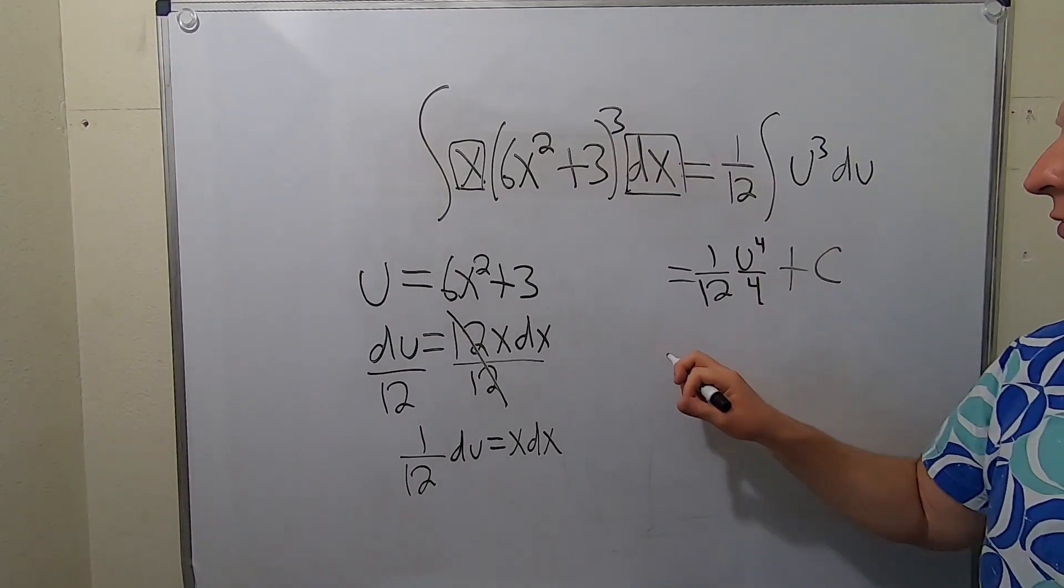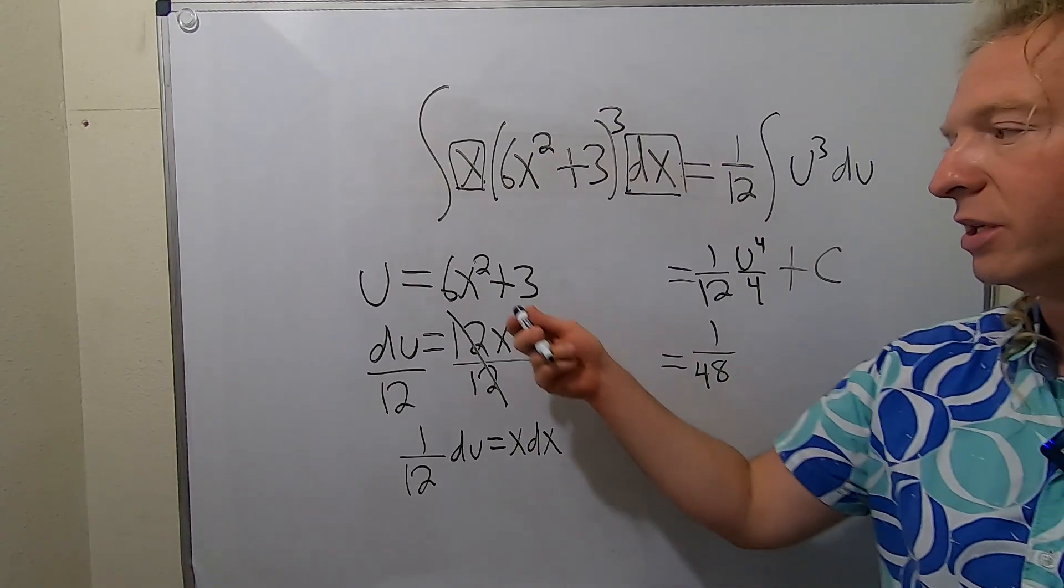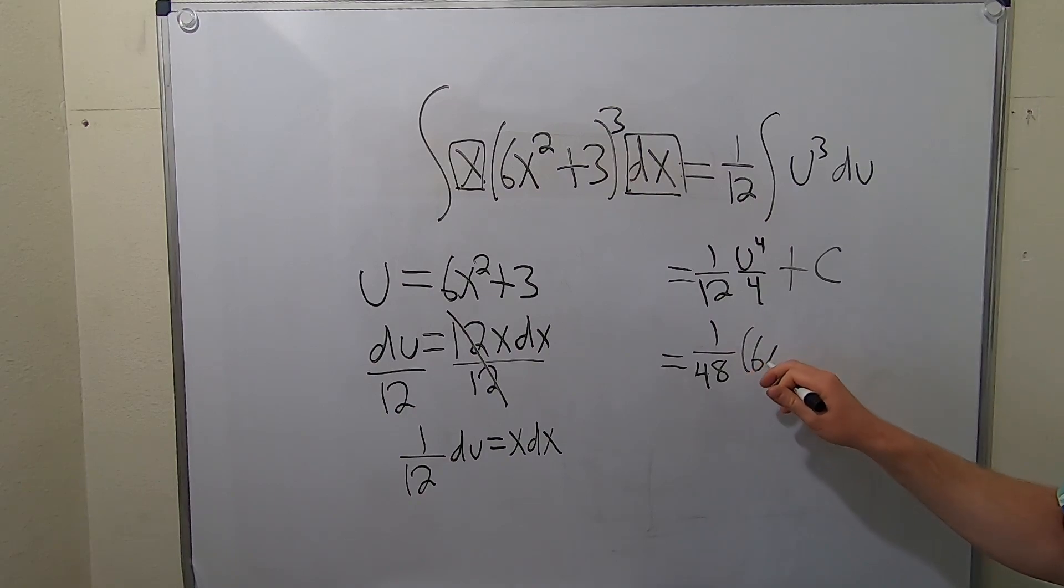12 times 4 is 48, so we get 1 over 48. u is this piece, so let's not forget to add that: 6x squared plus 3 to the 4th, plus our constant of integration, capital C. And that, my friends, is the final answer to this problem.